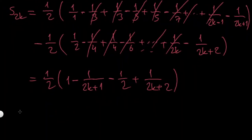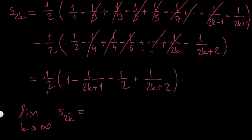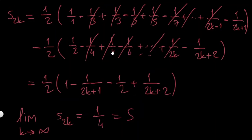So I have 1/2 times (1 + 1/2 + ...) — let's check the limit as k goes to infinity of S2k. This is 1/2 times: the term 1/(2k+1) goes to 0, and 1/(2k+2) also goes to 0. So inside I'm left with 1 − 1/2, which equals 1/2, giving 1/2 × 1/2 = 1/4. This equals my answer. But let me explain why checking S2k is sufficient.